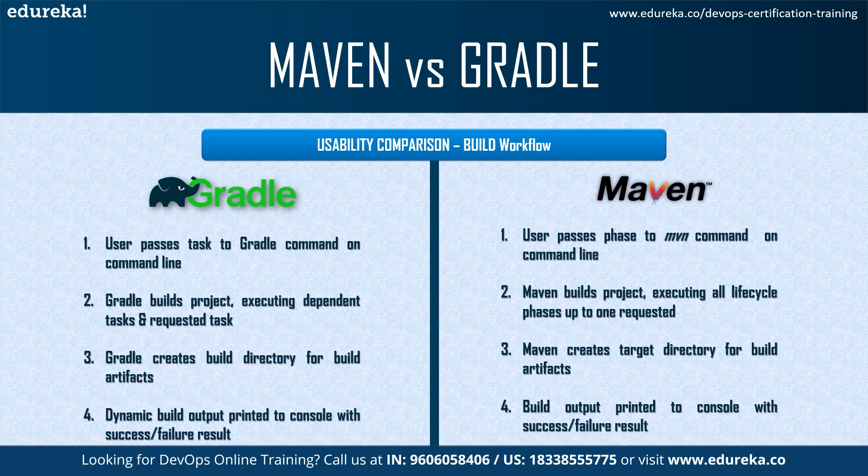When it comes to Maven: first, you need to install a local Maven, then install local Java, and set up a project for Maven. The user then passes phases to MVN — the notation for Maven — on the command line. Maven builds the project by executing all lifecycle phases up to the one requested, then creates a target directory for compiled classes. Build output is printed to the console with a success or failure result.